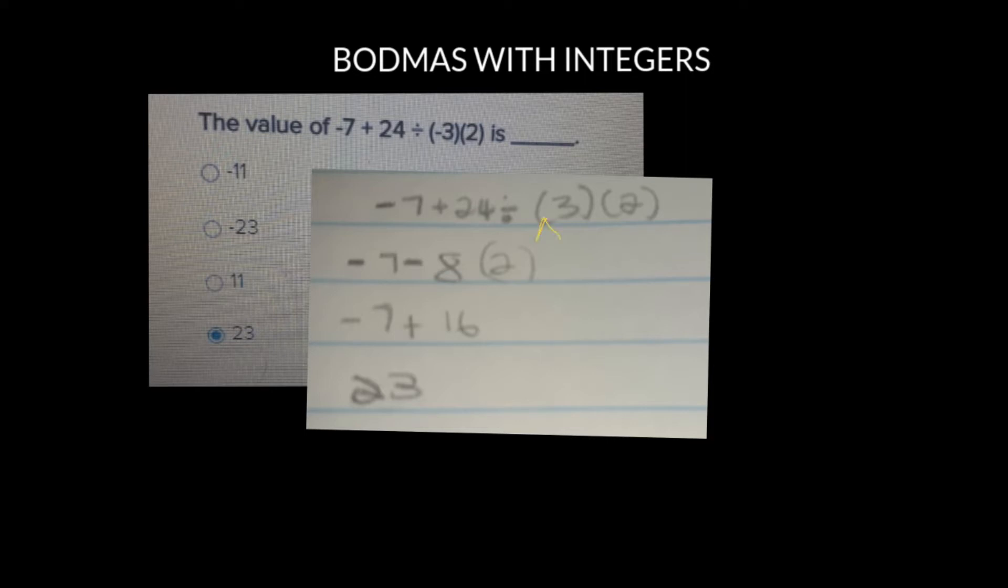So can you see here, the 3 was supposed to have been a negative. Alright, so that's always going to change things a little bit because it's negative 3 instead of positive 3.